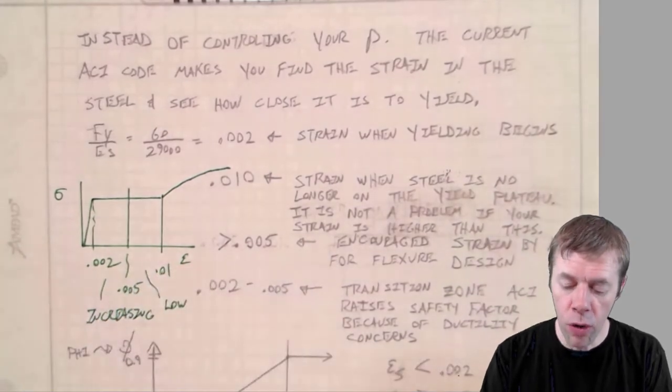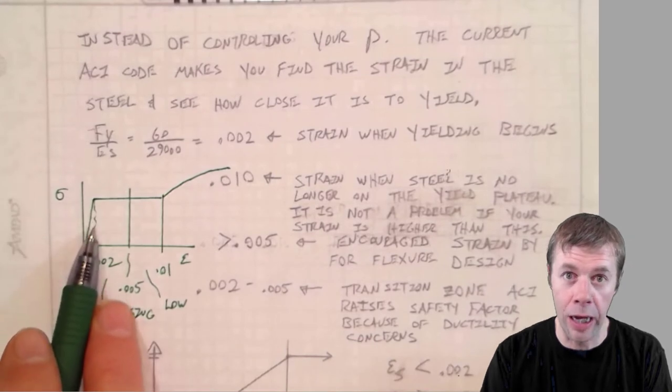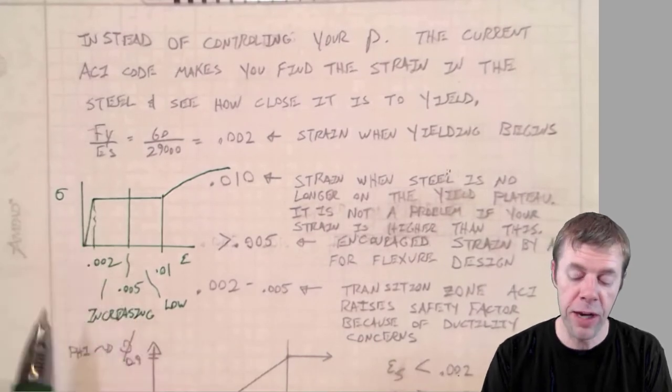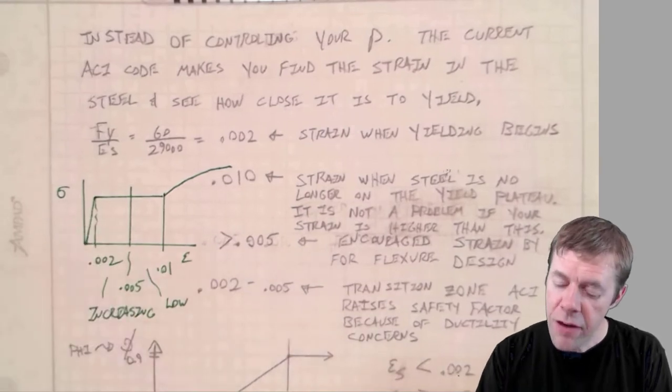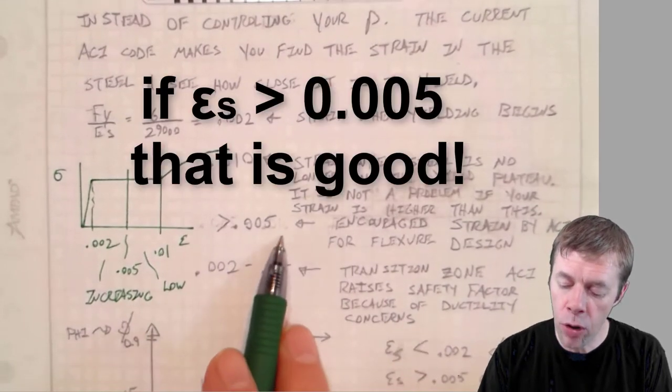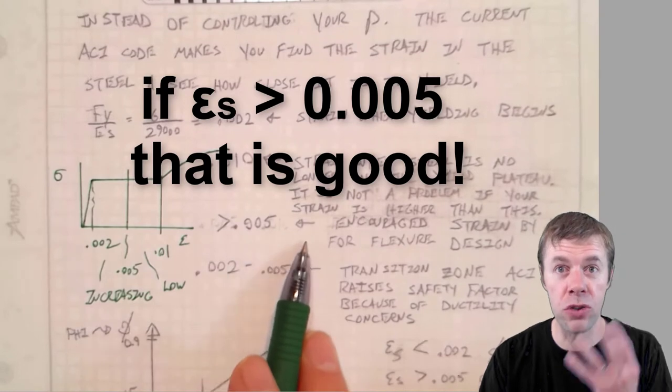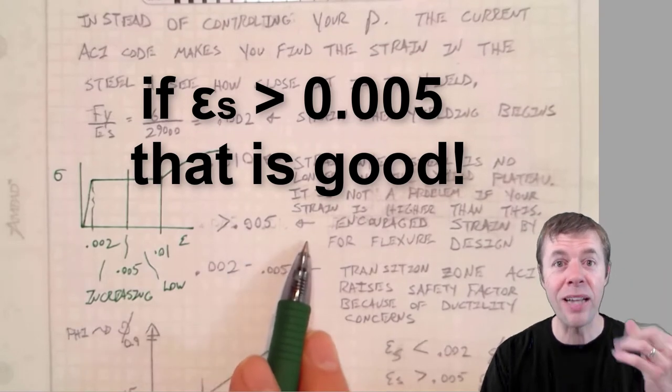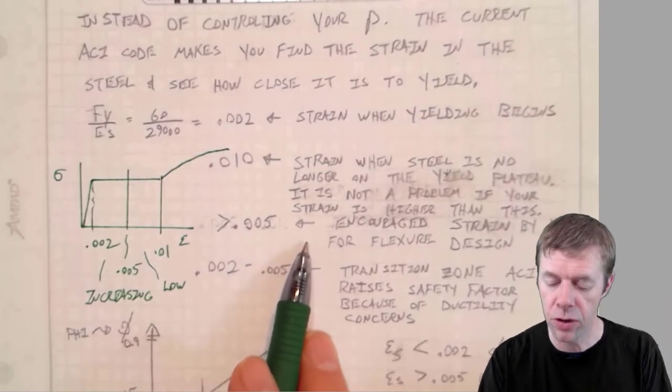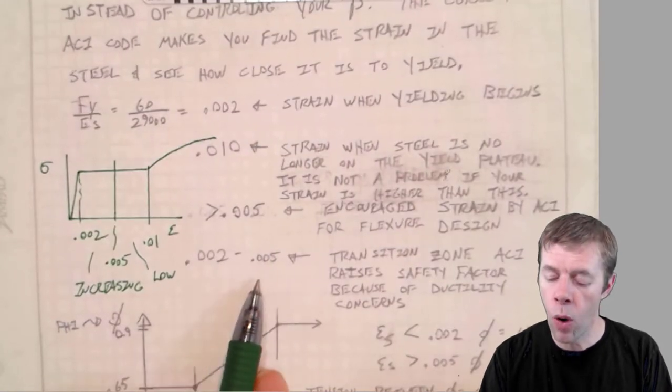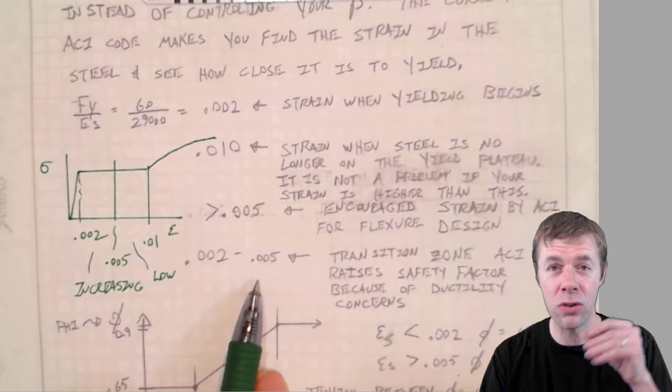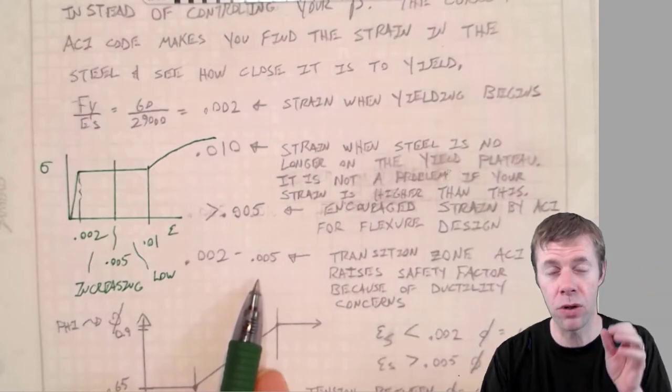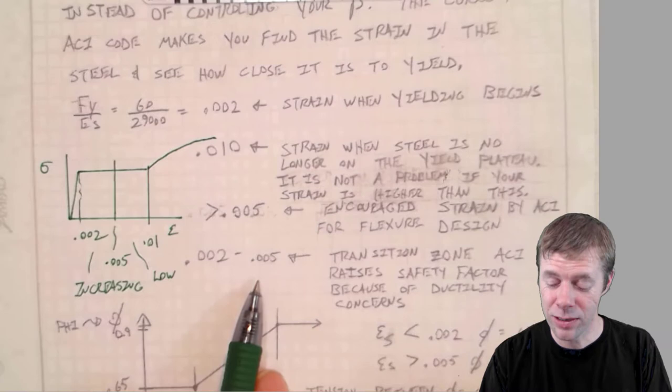And if your strain is between 0.005 and 0.002, as you get closer and closer, your safety factor is going to go high. So it's like increasing in this zone. And if you ever get it lower than that, this is kind of like the scary zone. This is when the safety factor is kind of the highest. So just to go over this again, if my strain is greater than 0.005, this is encouraged. This is a good thing. ACI likes this. So they give you a lower safety factor. If it's between 0.002 and 0.005, we call this the transition zone. And ACI is going to slowly raise the safety factor because they want ductility.